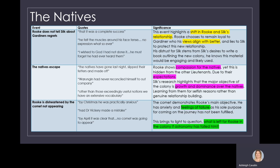And that leaves us to the end of section two. Looking at what will happen next in terms of native relationships, where Rook will find his purpose, and the relationships between Rook and Silk and Rook and Gardiner.